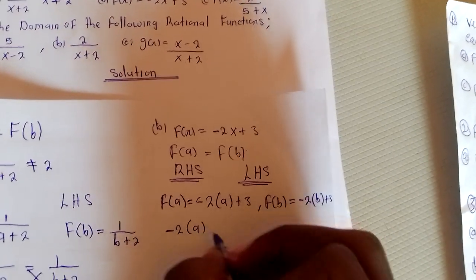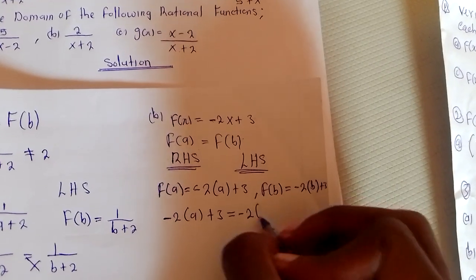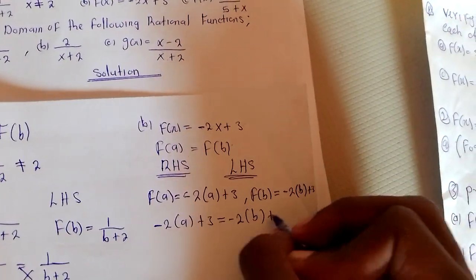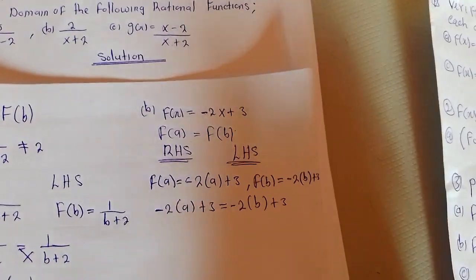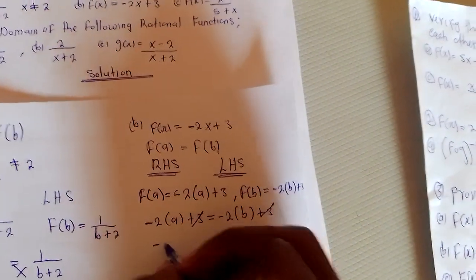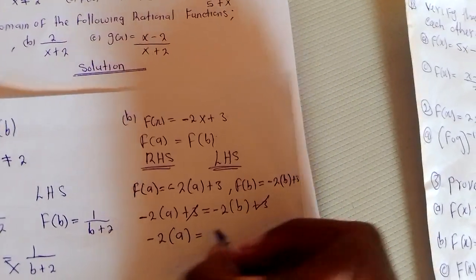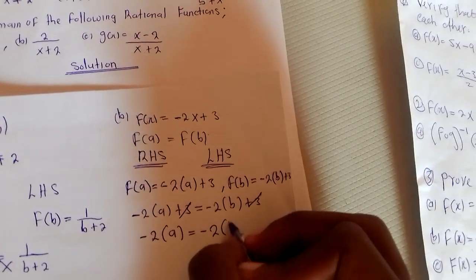Therefore, negative two A plus three must equal to negative two B plus three. This and this will go. I'm going to have negative two A equal to negative two B.